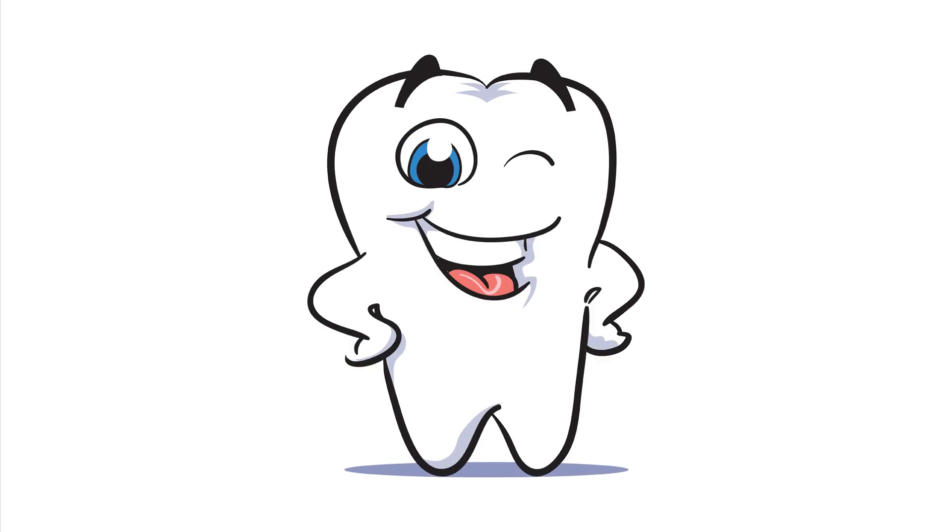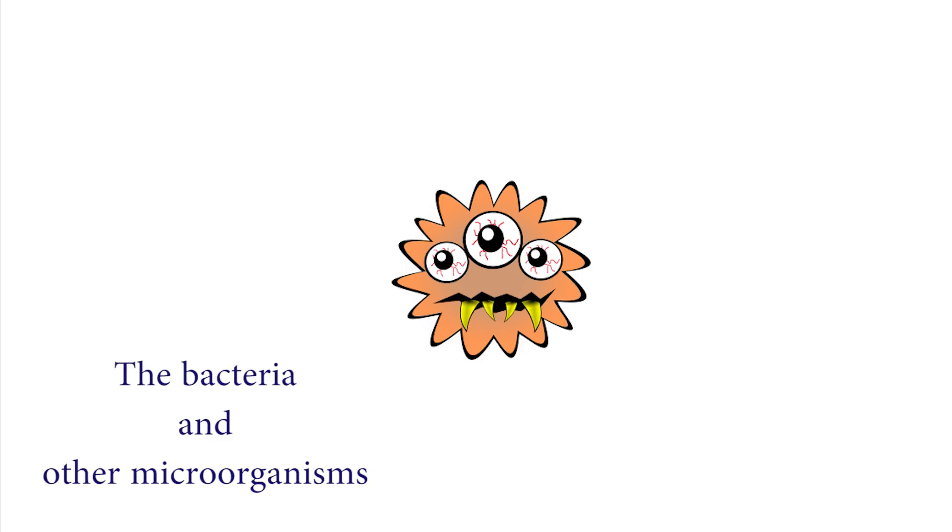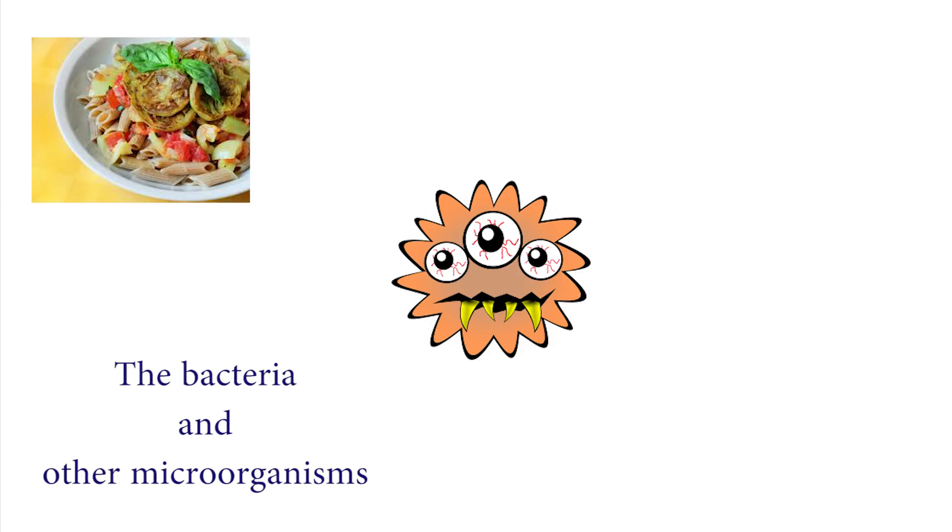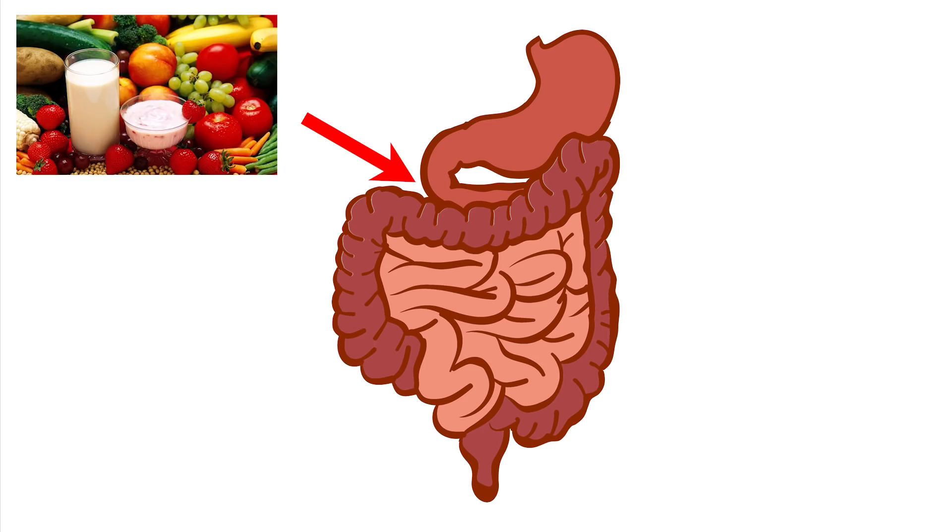The food is first crushed down by the teeth so that it can pass through the esophagus to reach the stomach, where it is partially stored, digested, and broken down further to semi-fluid. The bacteria and other microorganisms in the food are also destroyed in the stomach. From the stomach, the food travels to the intestines where the nutrients are extracted and transported to the bloodstream to be used by our bodies.